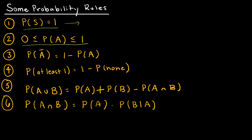For instance, when I flip a coin, I have heads and tails. The probability of heads is 1/2, and the probability of tails is 1/2. The probability of the sample space — all outcomes — is 1/2 plus 1/2, which is 1. It will always work out that the probability of all items in the sample space is 1, and each individual probability has to be between 0 and 1 inclusive.